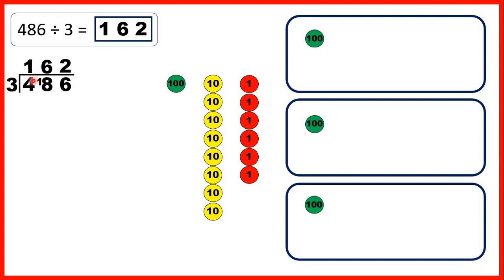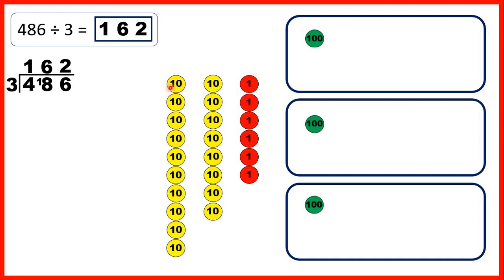Now let's think about why we could write the remainder in front of the next digit. That's because we can exchange our 1 hundred counter for 10 tens, which gives us 18 tens altogether. That's why we could write our remaining 1 hundred in front of our tens digit — because now we have 18 tens.